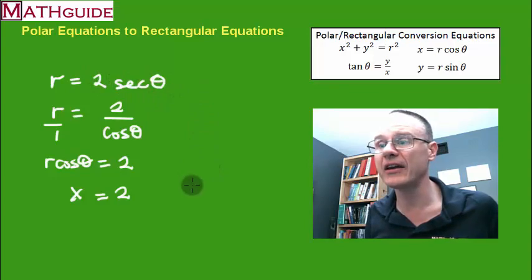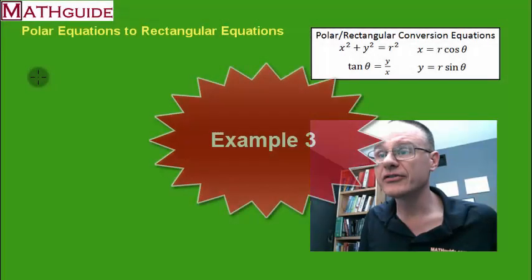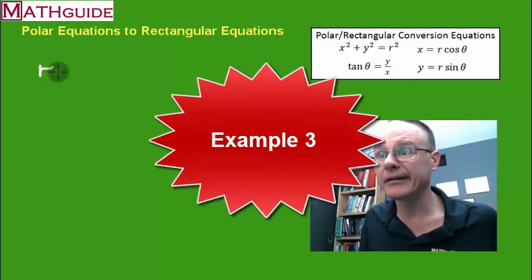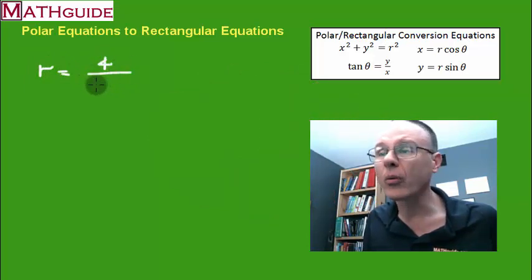So if I ever see a 2 secant theta, I know it's really just a vertical line. So here's example 3, and it's going to be a doozy.